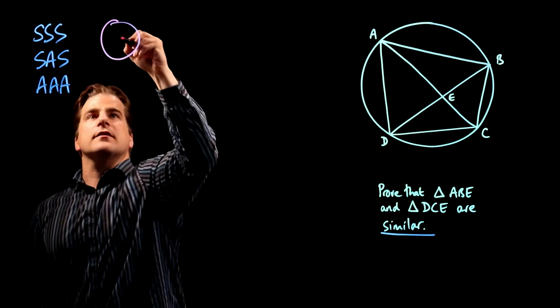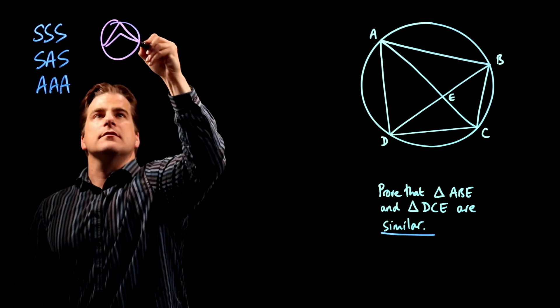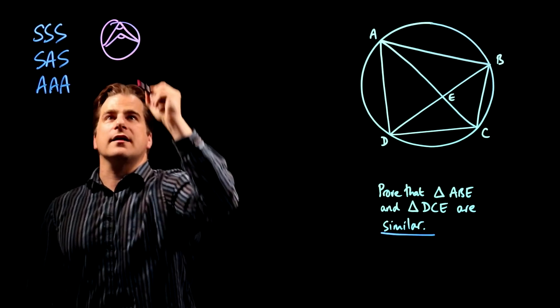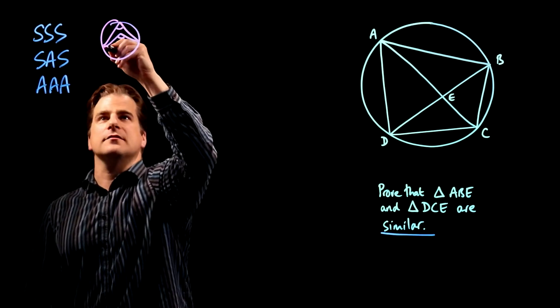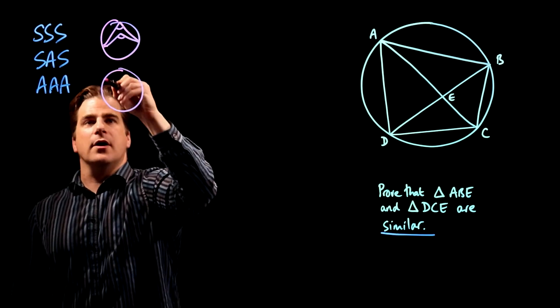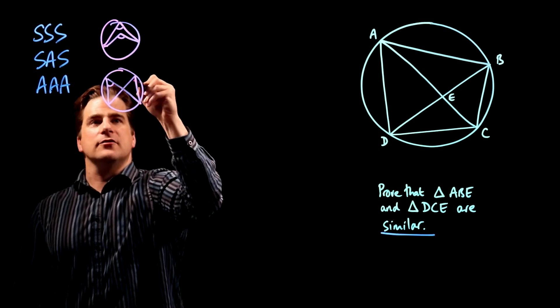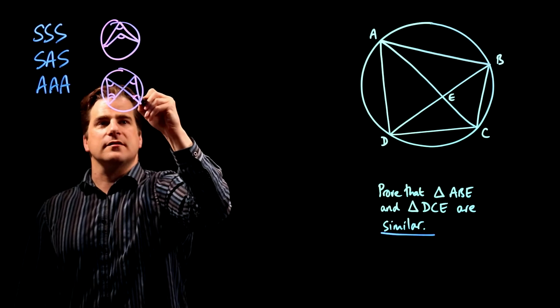The five circle theorems are, quick revision: Star Trek. That angle is twice. That angle is half that angle. Bow tie. Those two angles are the same. Those two angles are the same.